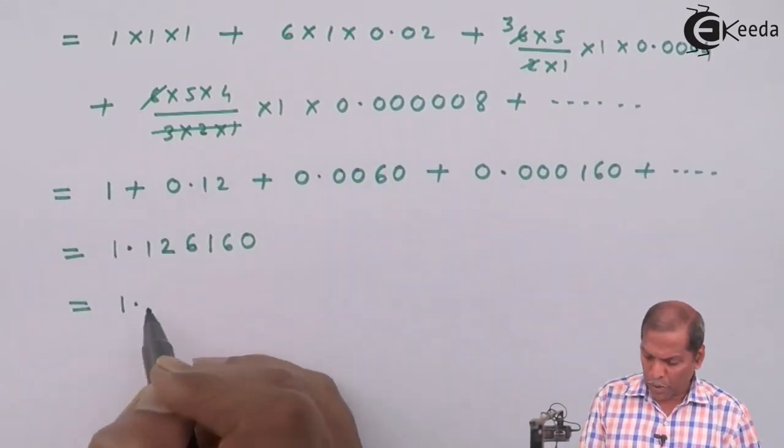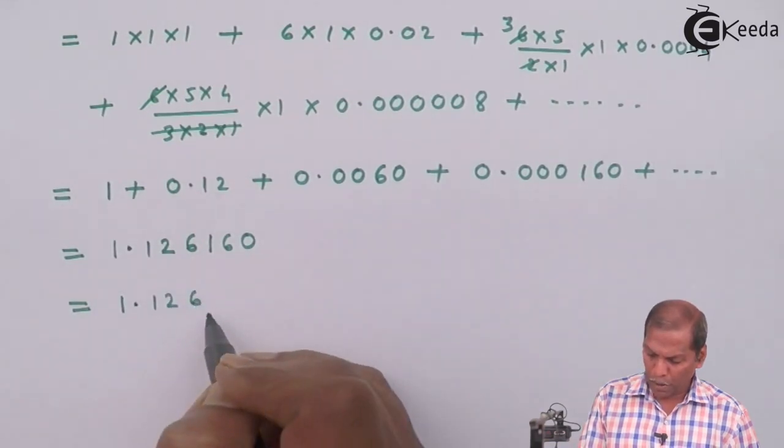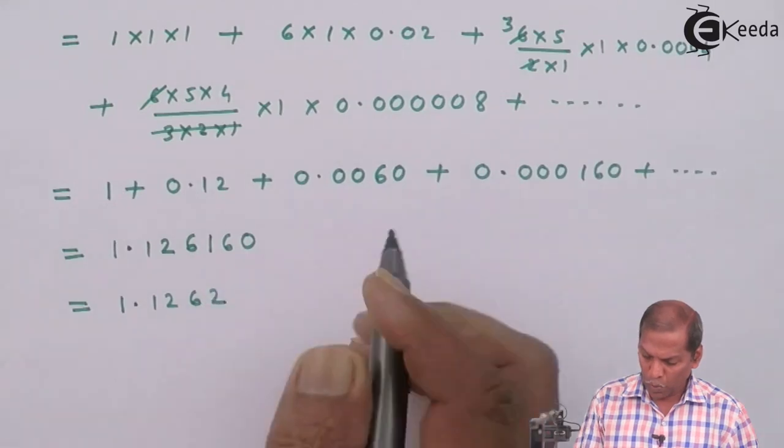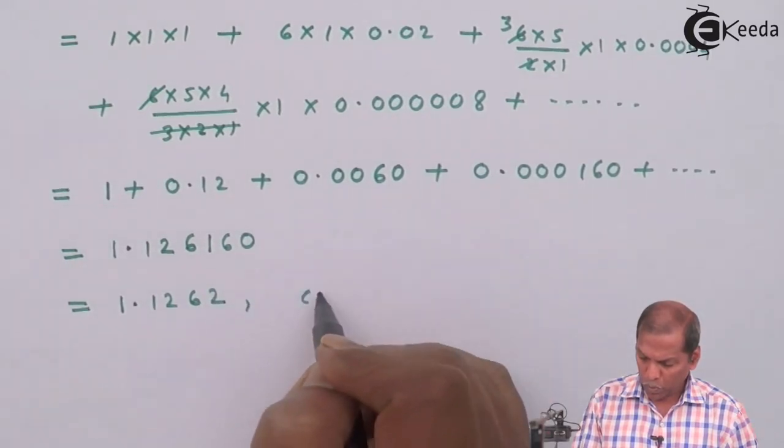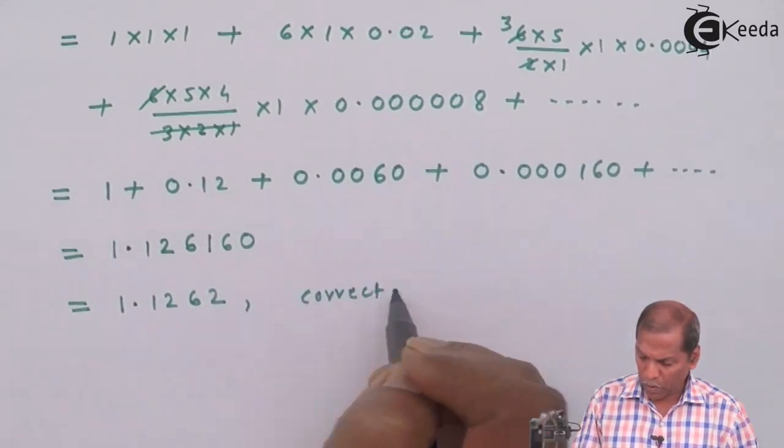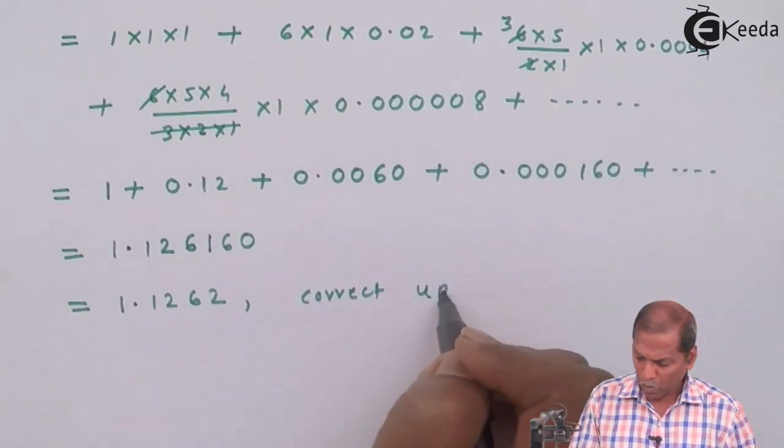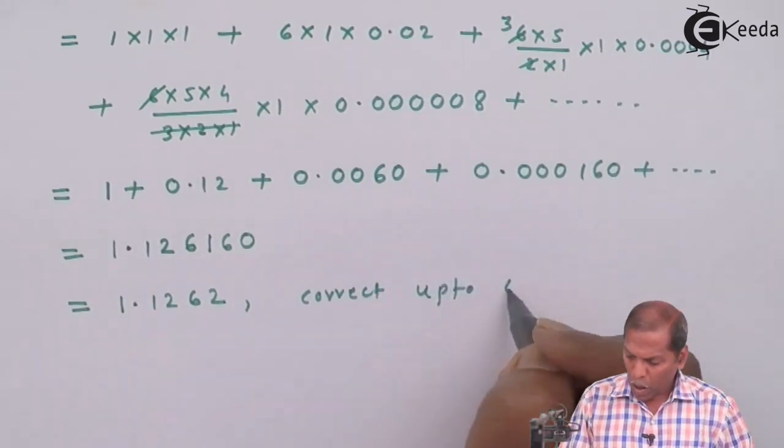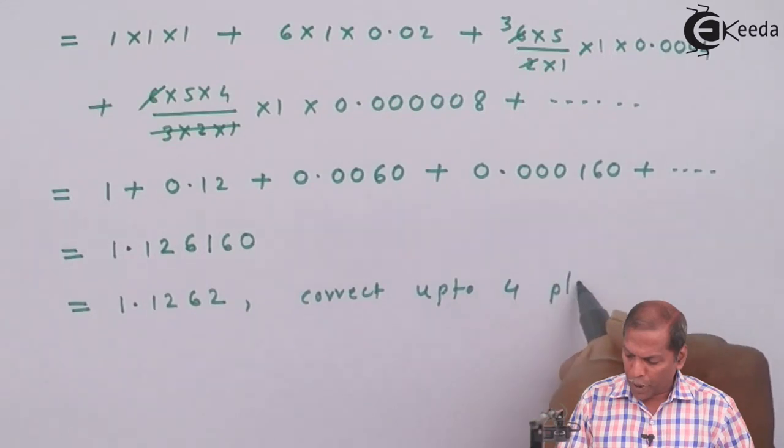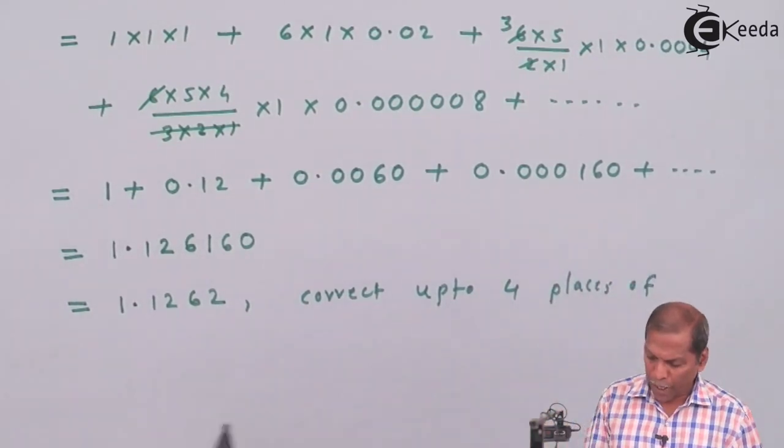Now this answer we have to write correct up to 4 decimal places, so this can be written as equal to 1.1262 correct up to four places of decimal.